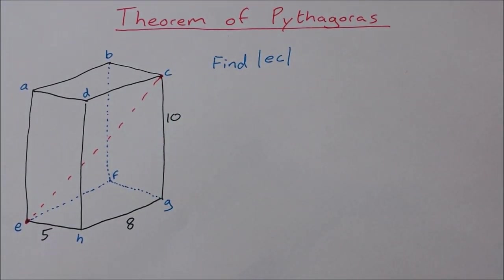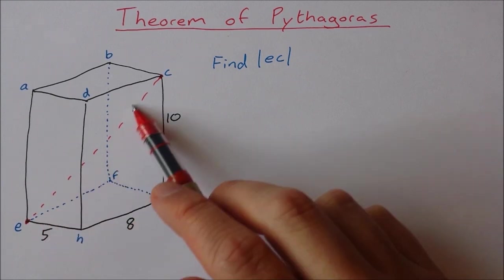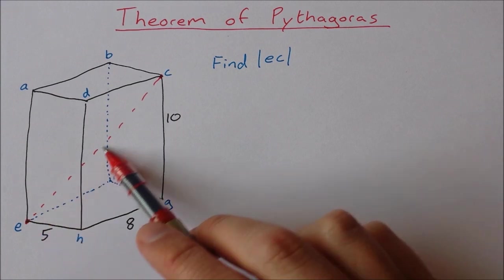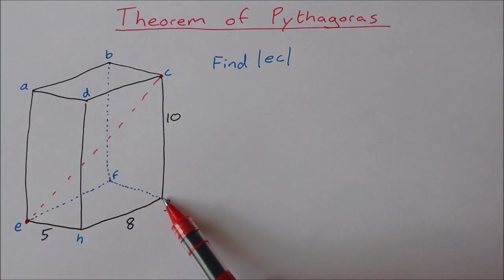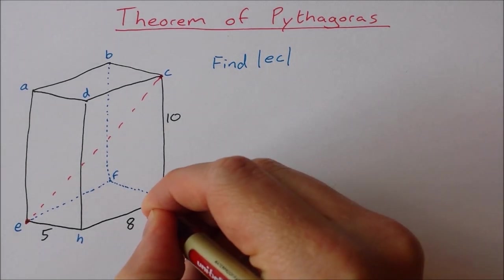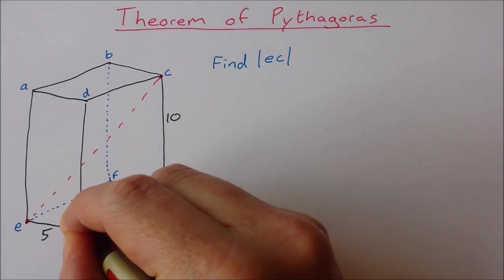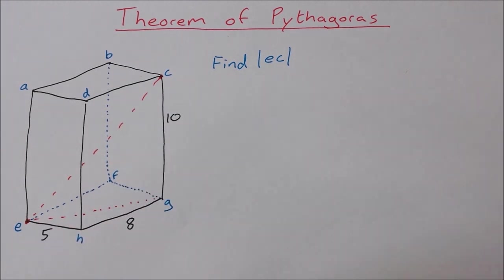Now there's no way that I can directly find EC. If I was to make a triangle out of this, it would go up here, down along CG, but then it would go back GE. So in order to find EC, I first need to find EG.